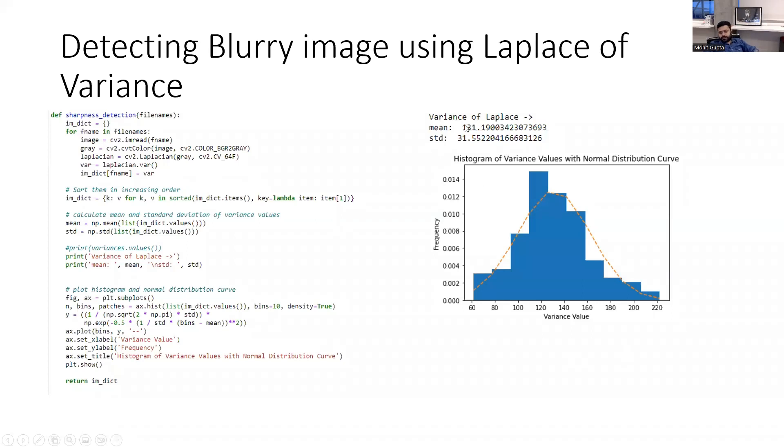So this is another way through which I was using this Laplace of variance to filter out the blurry images. So the suggestion is that you create this histogram and then you would just manually see if those images are blurry or not, and if they are, then you can remove them. So once that is done...